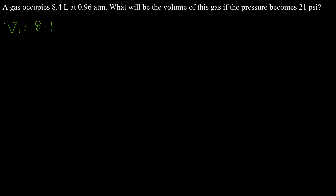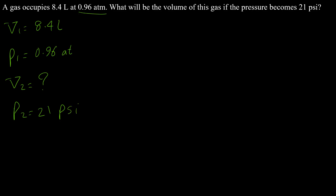Example 5: A gas occupies 8.4 liters at 0.96 atm. What will the volume be if the pressure becomes 21 psi? So v1 = 8.4 liters, p1 = 0.96 atm, and we want v2 when p2 = 21 psi. We should use Boyle's Law, but the pressure units are different — atm and psi — so we must convert one to the other.